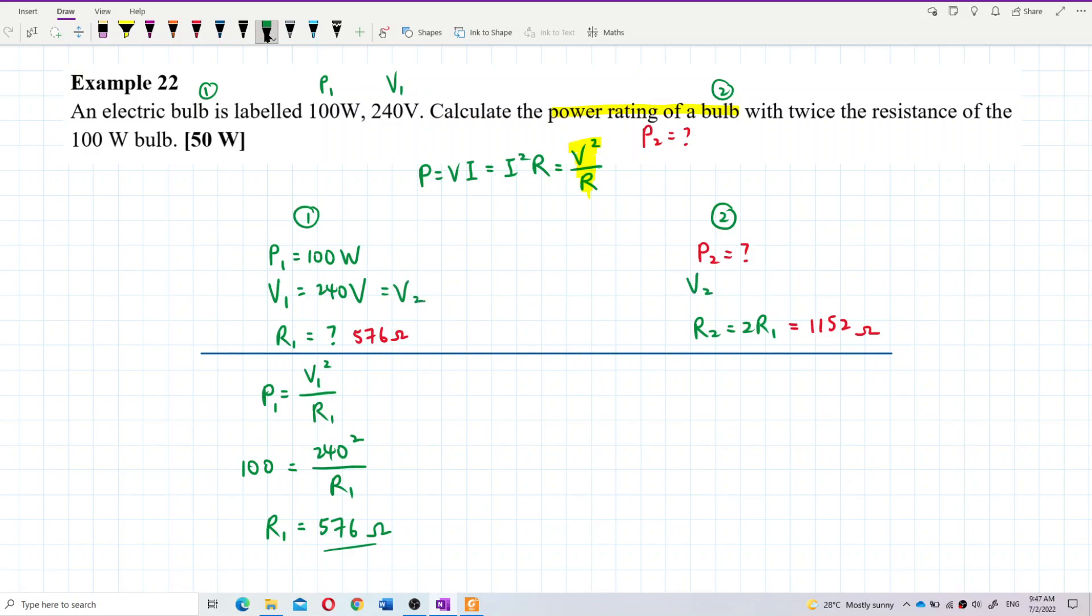Because the voltage supply is the same, it's 240 volts also. So let's calculate power 2. Also use the same formula, V square over R. So this is 240 volts square, V square over R. R2 is 1152 ohms. Now calculate.